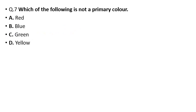Question number 7: Which of the following is not a primary color? The options are red, blue, green, or yellow. Yellow is not a primary color. The rest — red, blue, and green — are all primary colors.